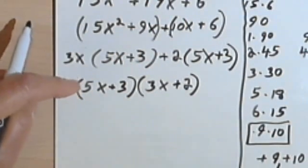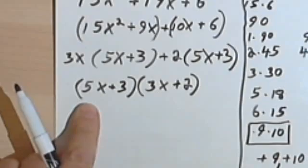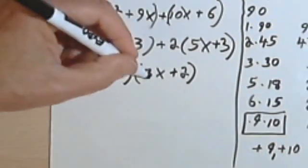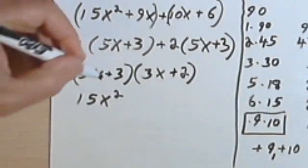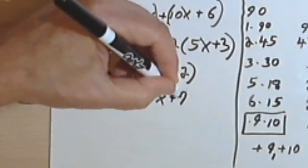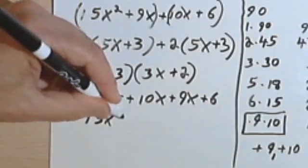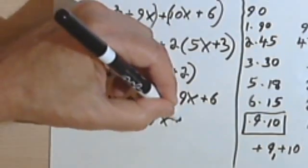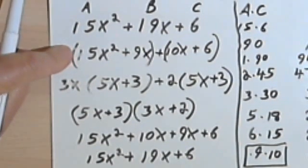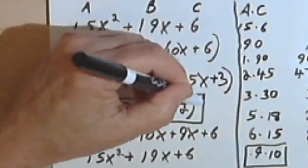Now if any of this process here was confusing, go back and review factoring by grouping, because that's what we just did. So this should be my factorization. Let's multiply this out and make sure we can get back to the original problem. So 5x times 3x is 15x², 5x times 2 is 10x, 3 times 3x is 9x, and 3 times 2 is 6. Combining the two middle terms, I'm going to get 15x² + 19x + 6, which is the same thing I began with. So this factorization checks.